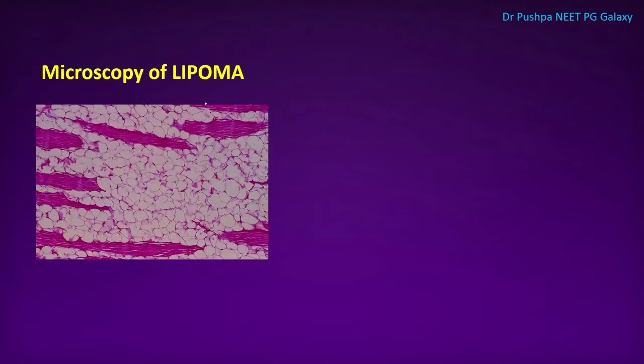In the microscopy of lipoma, these are the adipocytes — plenty of adult fat cells can be seen. Lipoma is a long-standing tumour; sometimes the patient may not notice the swelling. It is an extremely slow-growing tumour.